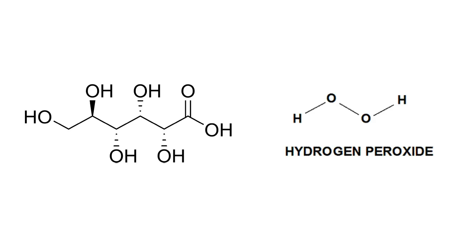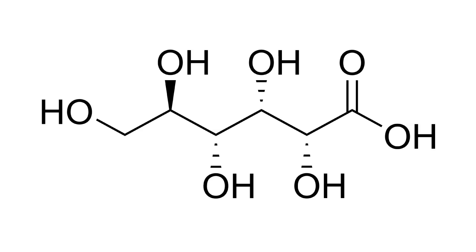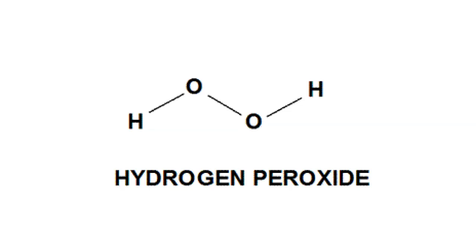The gluconic acid turns the honey acidic with a low pH that is inhospitable to bacteria, mould, and fungi. The hydrogen peroxide gives the honey a short-range protection against these same organisms when the honey is ripening or diluted for larvae food.